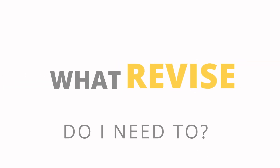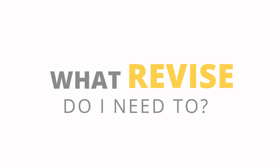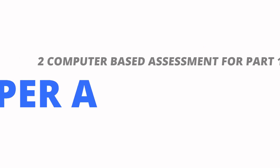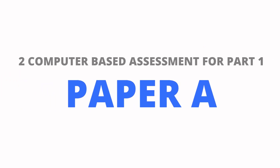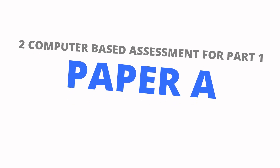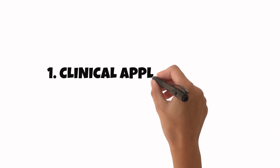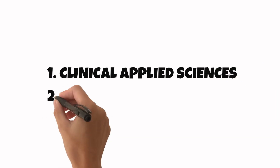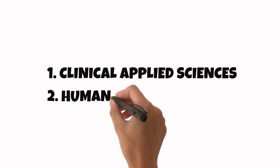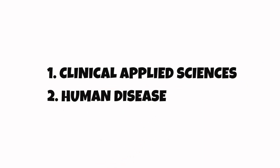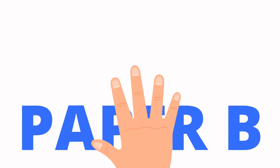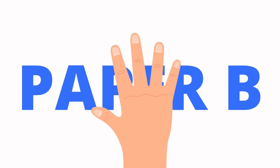What is the syllabus of part one ORE? There are basically two computer-based exams for part one. Paper A covers the clinically applied dental sciences and the clinically applied human disease, very similar to what you may have covered in your pre-clinical years as a dental student. Paper B covers mostly aspects of clinical dentistry, including law and ethics, and health and safety.